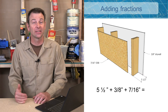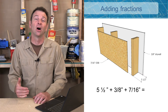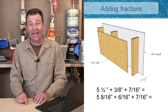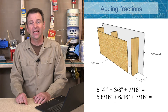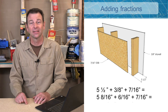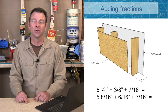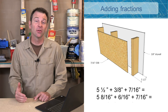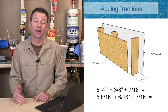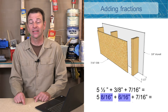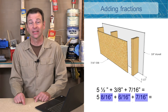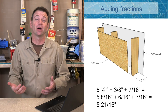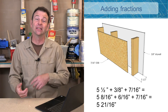We're going to choose 16, which will convert all of our numerators to different numbers. Five and a half turns into five and eight-sixteenths. Our three-eighths we can convert to six-sixteenths — same value, different numbers. Now that we have all our denominators the same, we can add these numbers together. We know that we have the five inches; let's add the fractions: eight-sixteenths plus six-sixteenths plus seven-sixteenths is a total of twenty-one sixteenths. Twenty-one sixteenths is an improper fraction — it's heavy on the top.